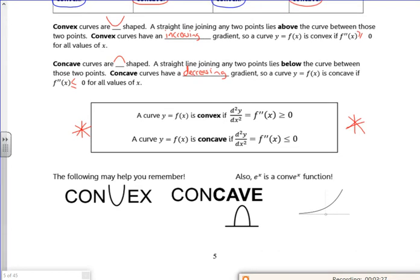So there's a little picture here to help you. The convex is like the U shape and the concave is like a cave entrance. And you can also think that convex is like e^x. Because it's going up. If you think about the gradient, the gradient is getting more as we go there. So that's all of page five done.